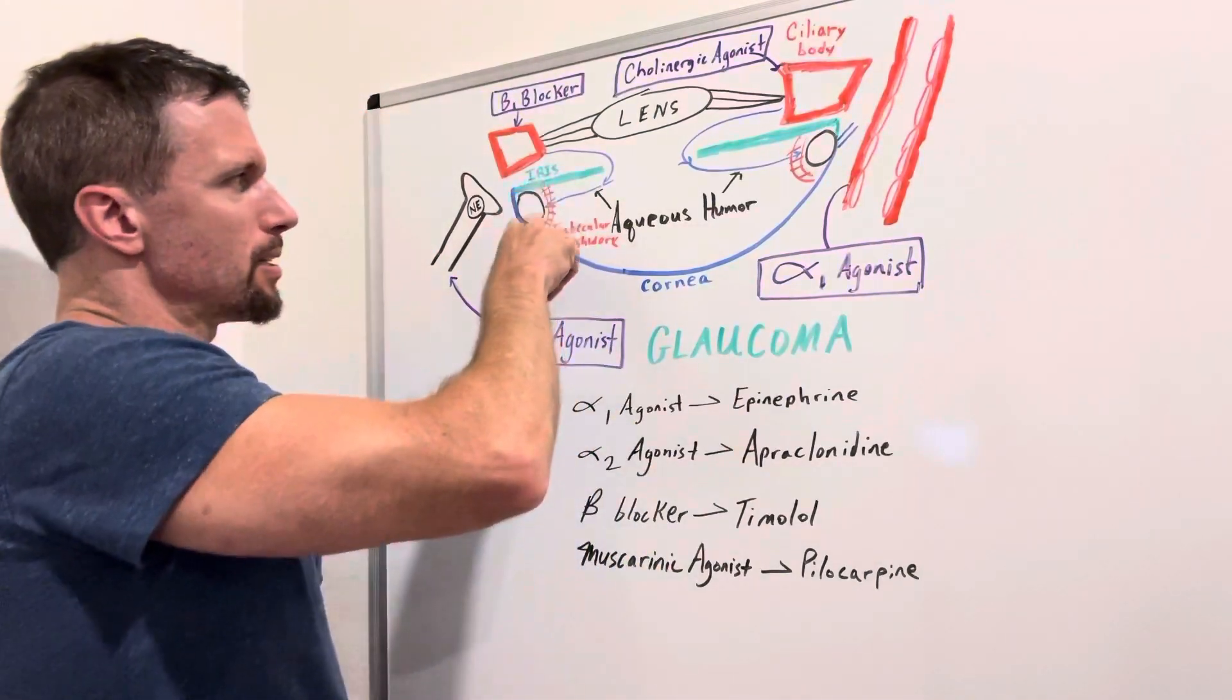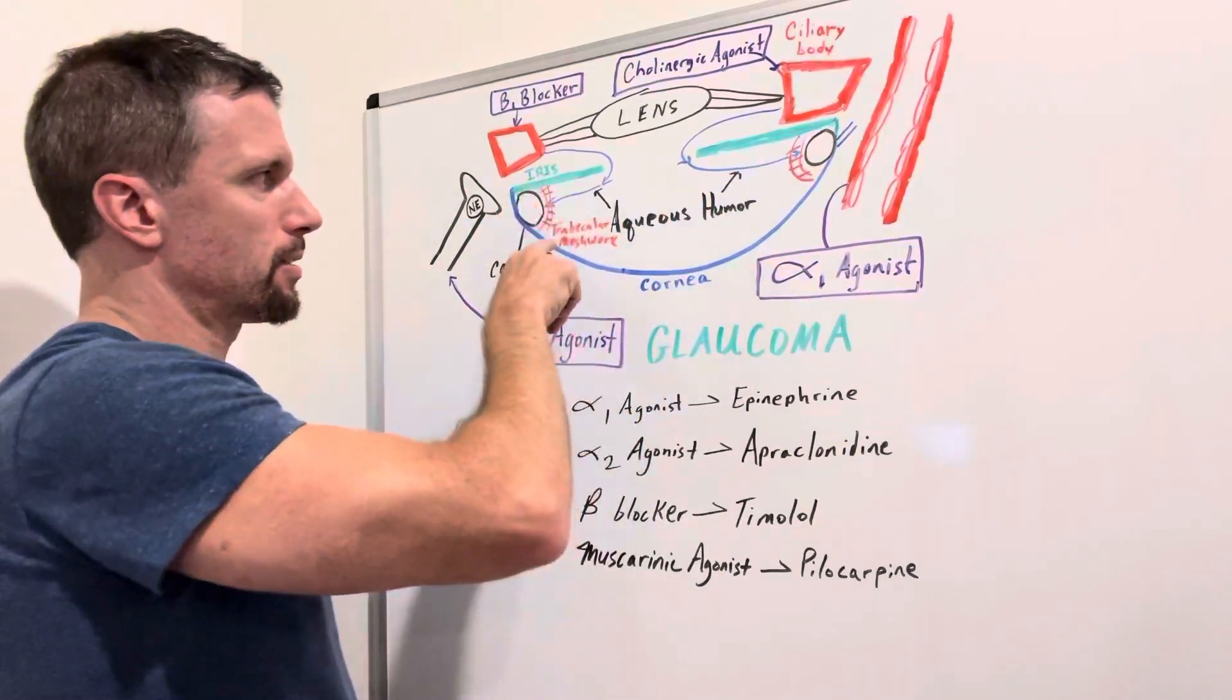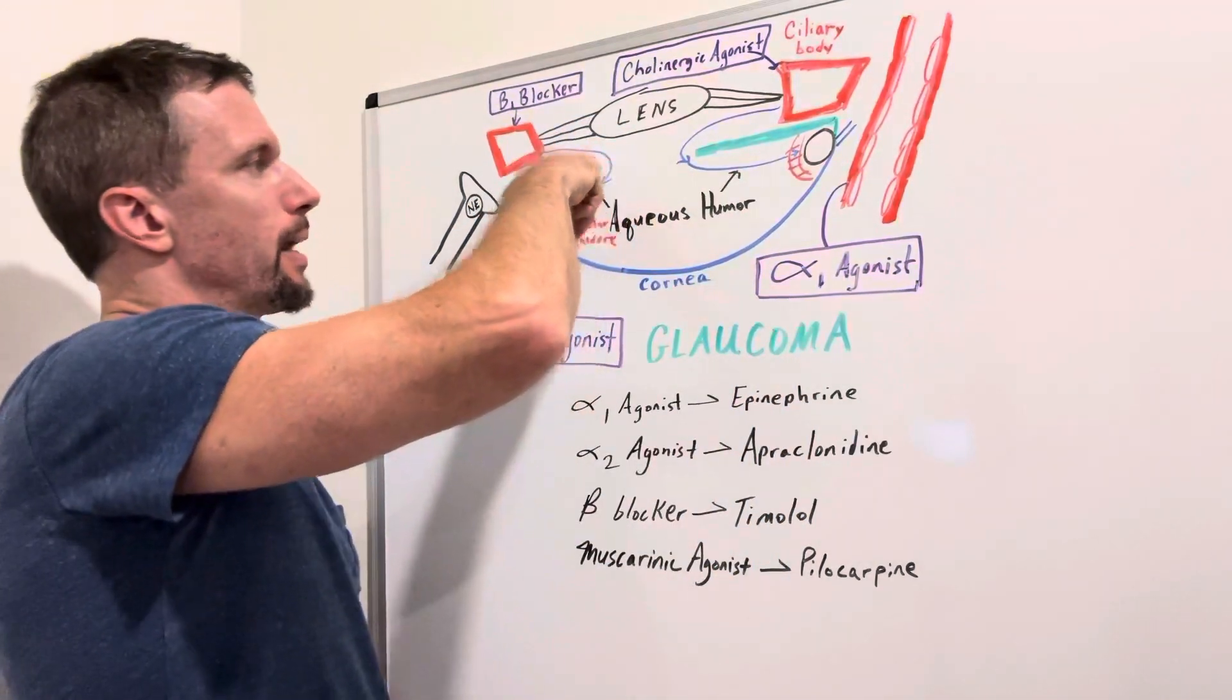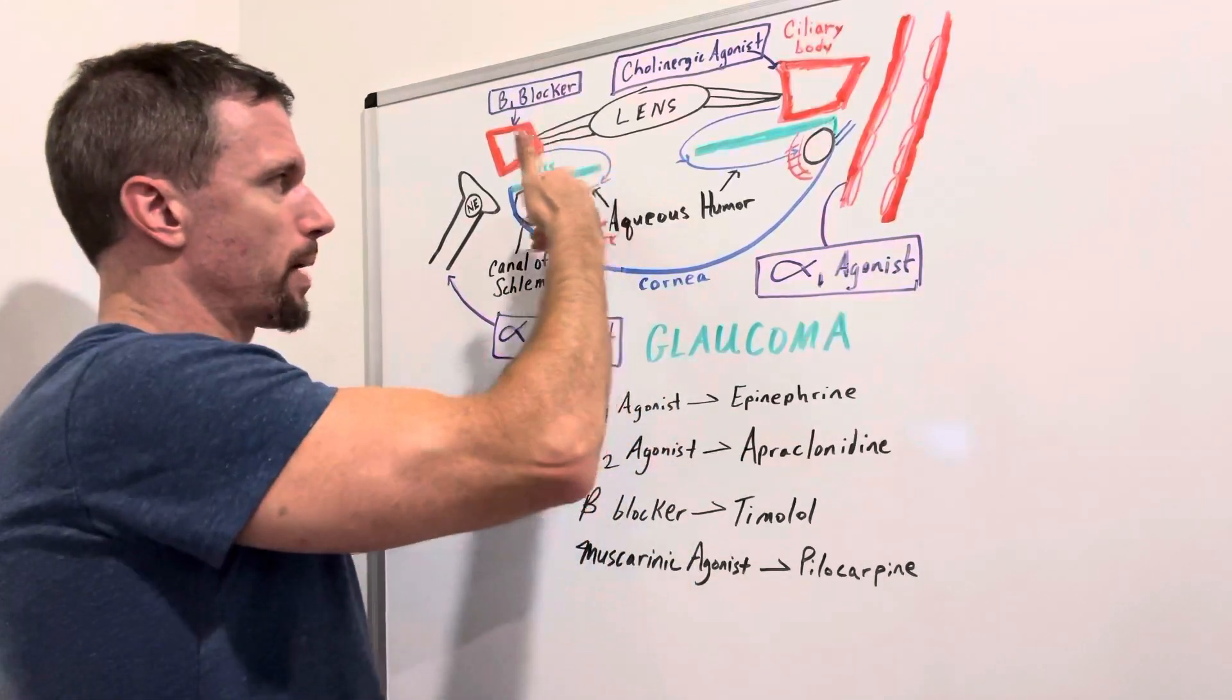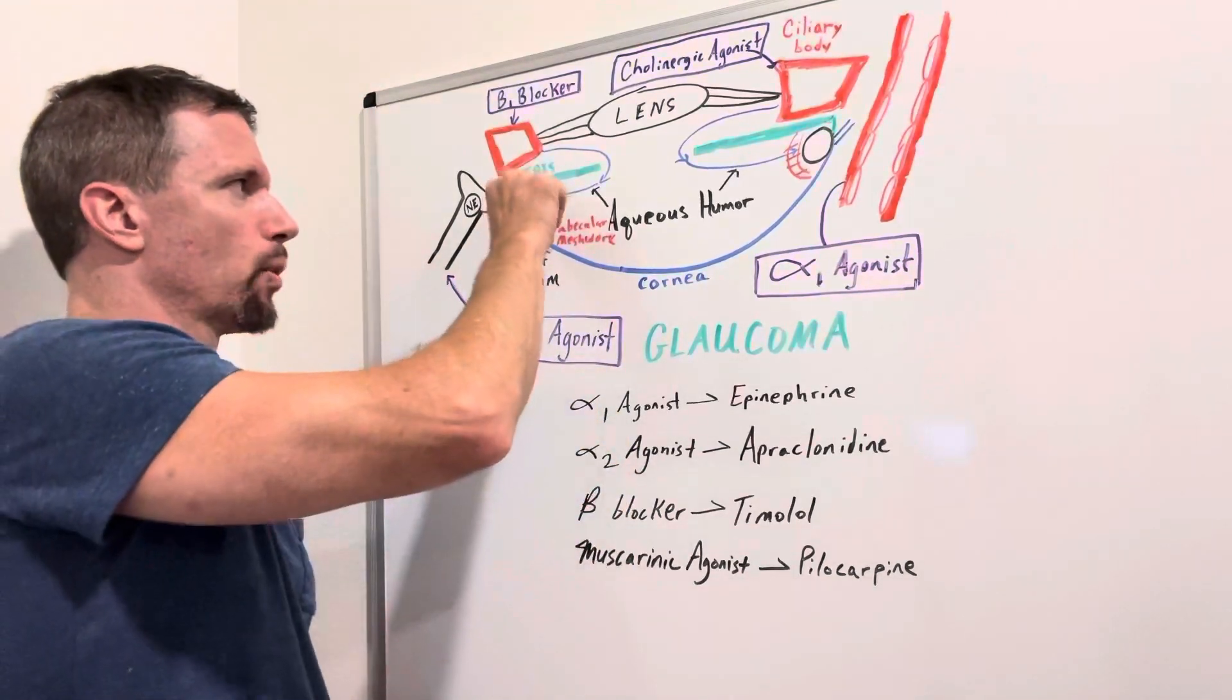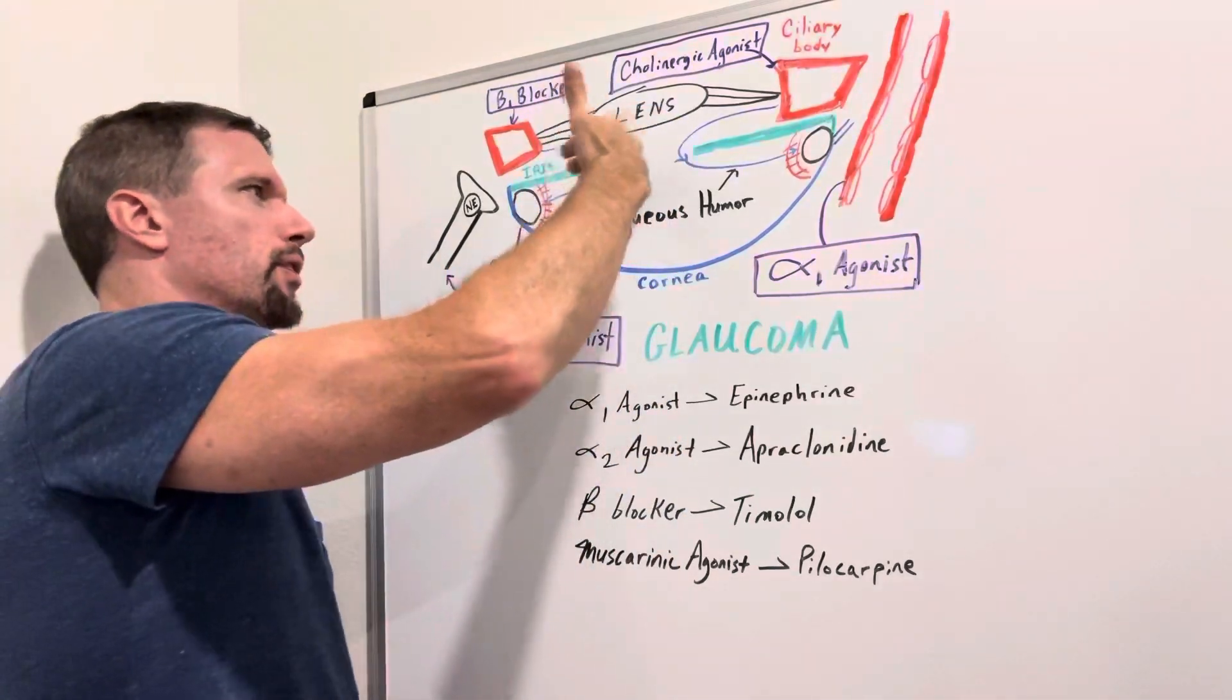So this is important for all this. I kind of drew it on both sides here. This red, this is called the trabecular meshwork. And for that fluid, that aqueous humor to flow into the canal of Schlem, it's got to get through that trabecular meshwork. And this is the problem with open angle glaucoma a lot of times is this meshwork isn't very penetrable and some of this fluid gets backed up.